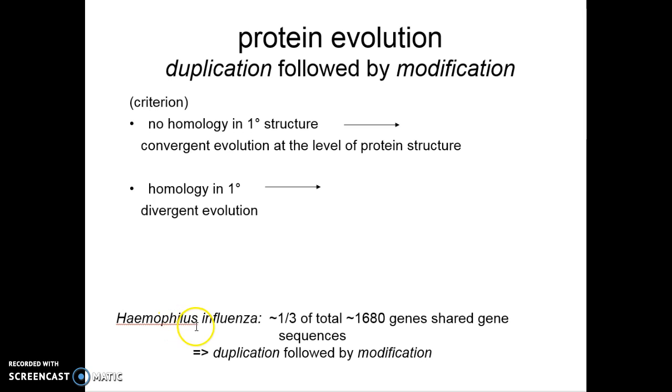In Haemophilus influenzae, one-third of total genes are actually sharing gene sequences, thus supporting duplication and modification theory. I may continue the explanation in the second part.